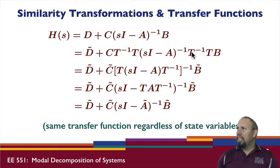C times T inverse is C tilde, T times B is B tilde. These three matrices together have the inverse given here. You can go through and show that the inverse of this product equals this.